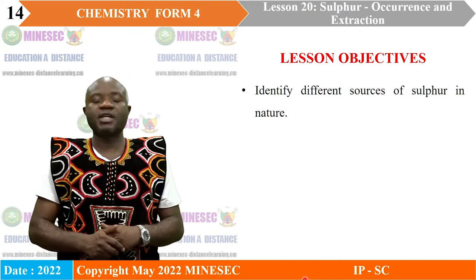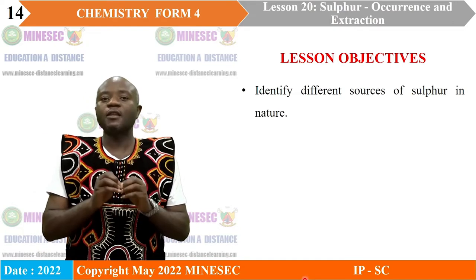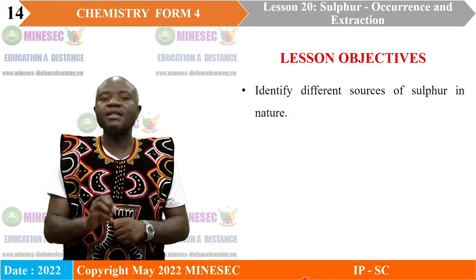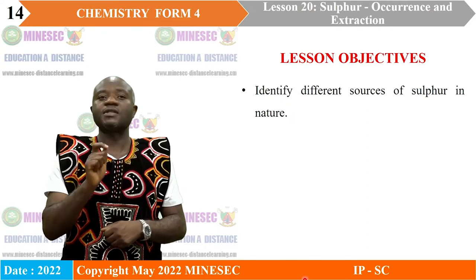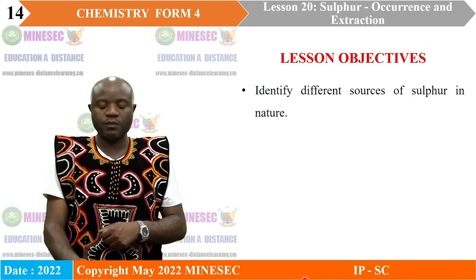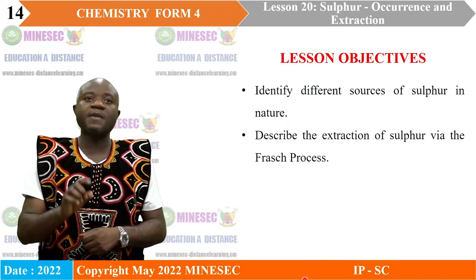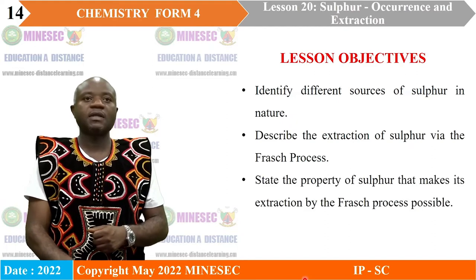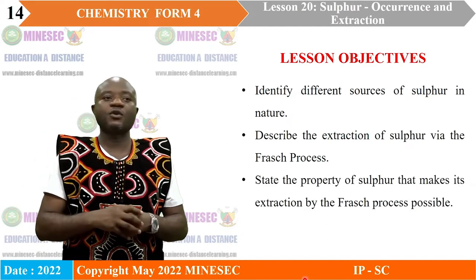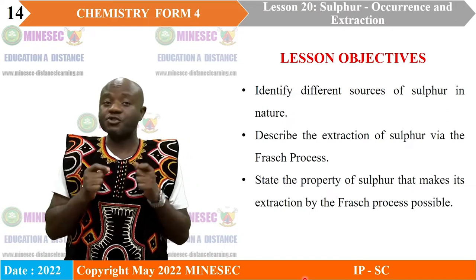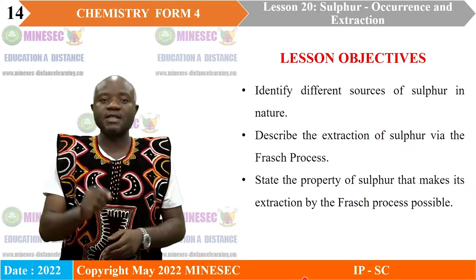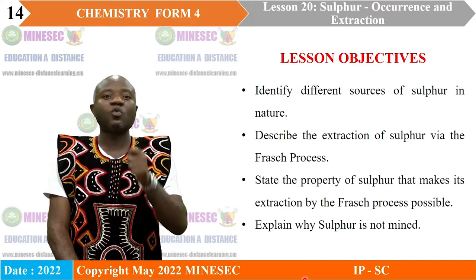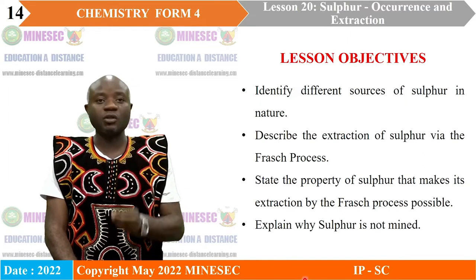Lesson objectives: By the end of this lesson, you should be able to identify different sources of sulfur in nature, describe the extraction of sulfur by the Frasch process, state the property of sulfur that makes its extraction by the Frasch process possible, and explain why sulfur is not mined.